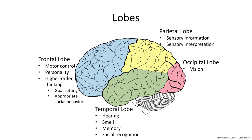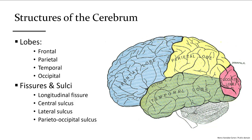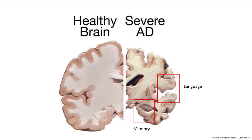The occipital lobe at the very posterior portion of the brain processes visual information from the eyes. The inferior lateral lobes are the temporal lobes, which process smell, hearing, and equilibrium, in addition to significant features for memory. The surface of the cerebrum has fissures and prominent sulci. The longitudinal fissure divides the brain into right and left halves. The central sulcus separates the frontal lobe from the parietal lobe. In an Alzheimer's patient, dramatic reduction in brain mass is visible with much more prominent sulci, and regions associated with memory, language, and smell are severely affected.